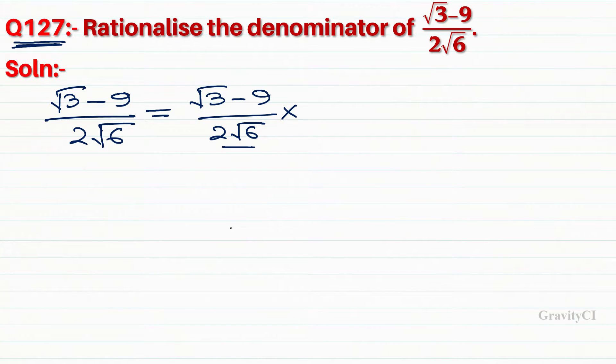The rationalizing factor is √6. We need to multiply the rational number to make it rational.